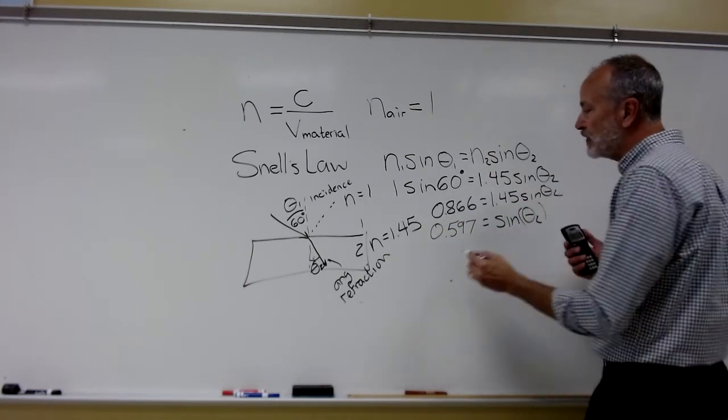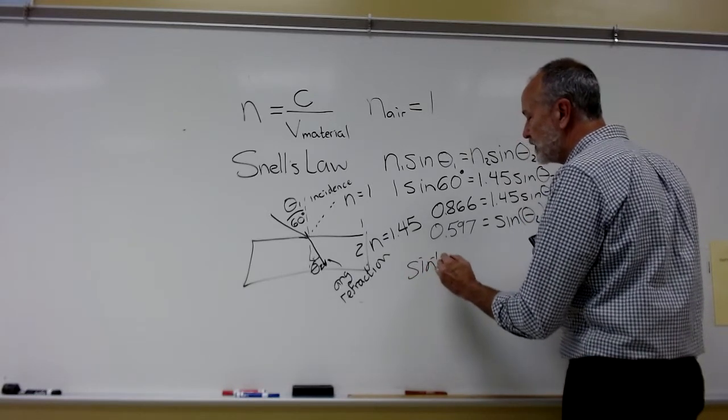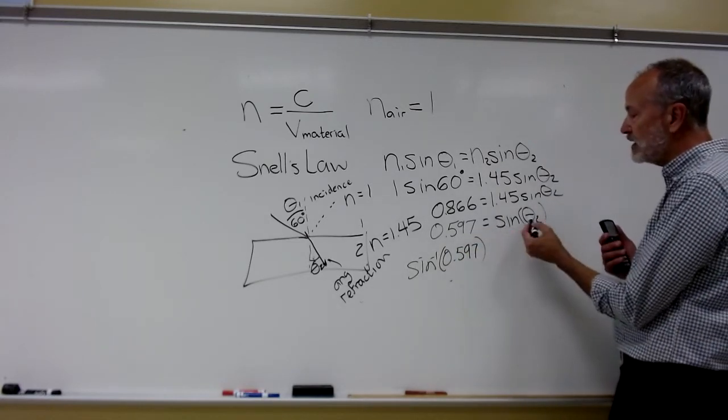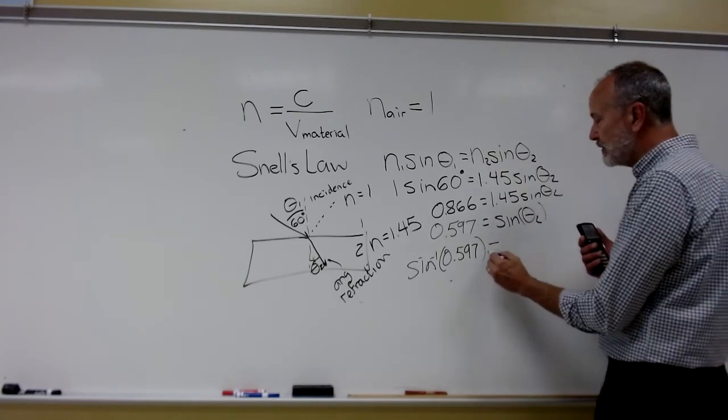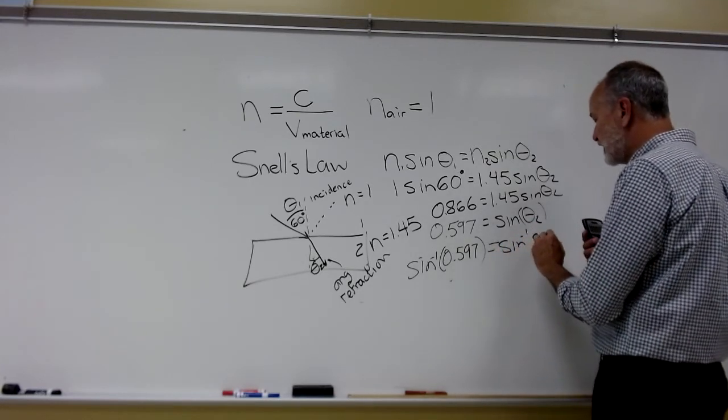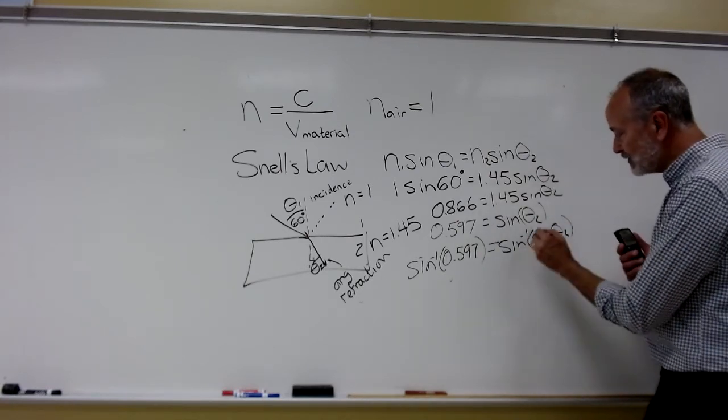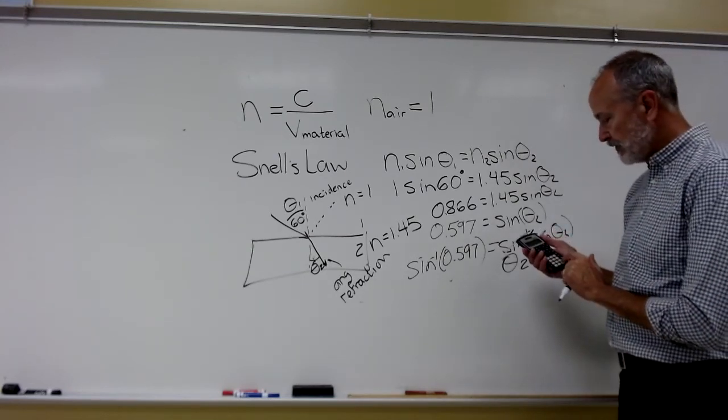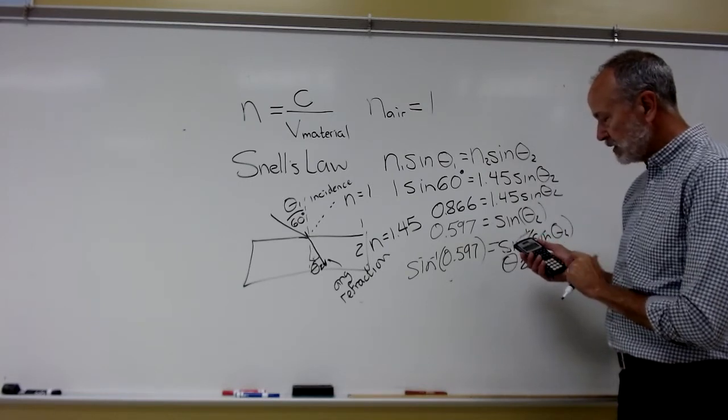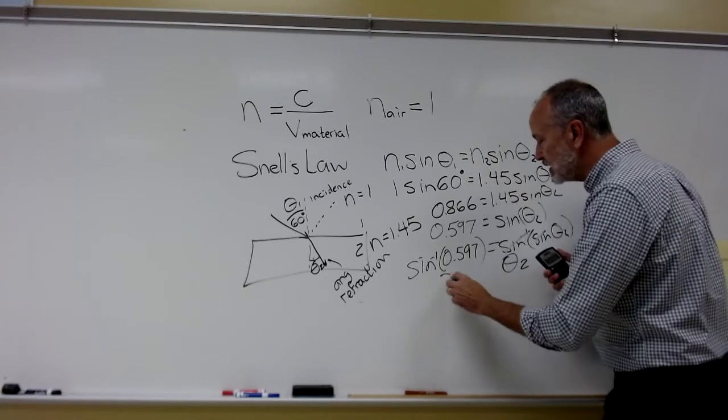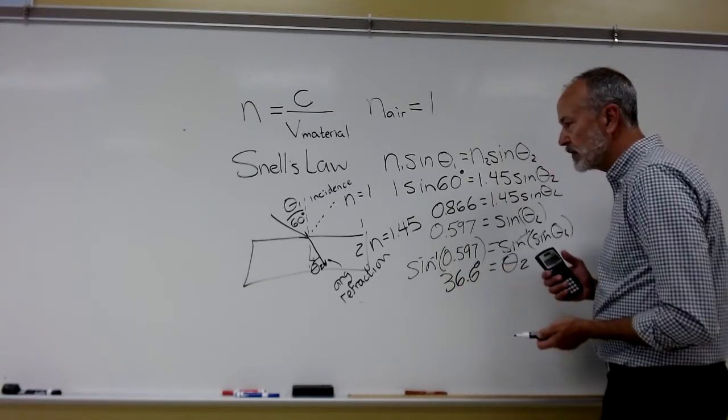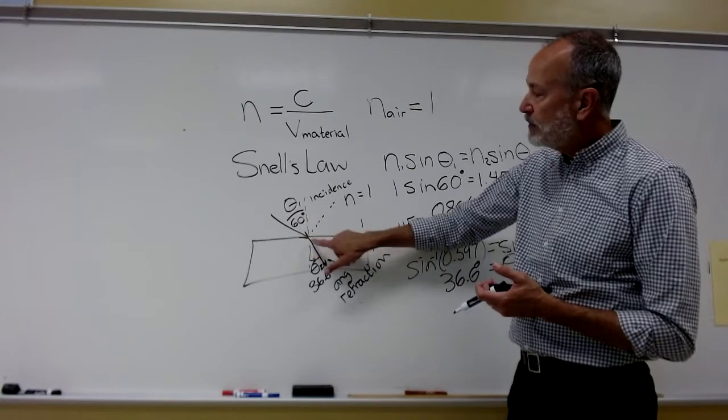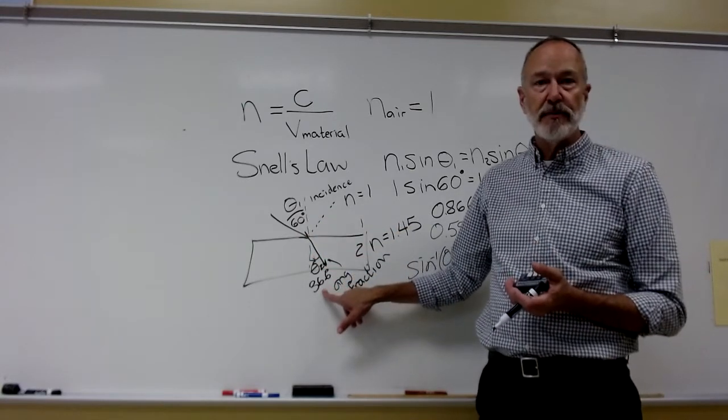Now to get that, we need to do the inverse sine of both sides. Whatever I do to one side, I've got to do to the other. Inverse sine of 0.597 is the inverse sine of sine of theta 2, which just basically cancels those out and gives me theta 2. So in here, I'm going to put second inverse sine of 0.597 equals 36.6 degrees. That means this angle would be 36.6 degrees. Does that make sense? Well, it bends towards the normal, so this has to be a smaller number.